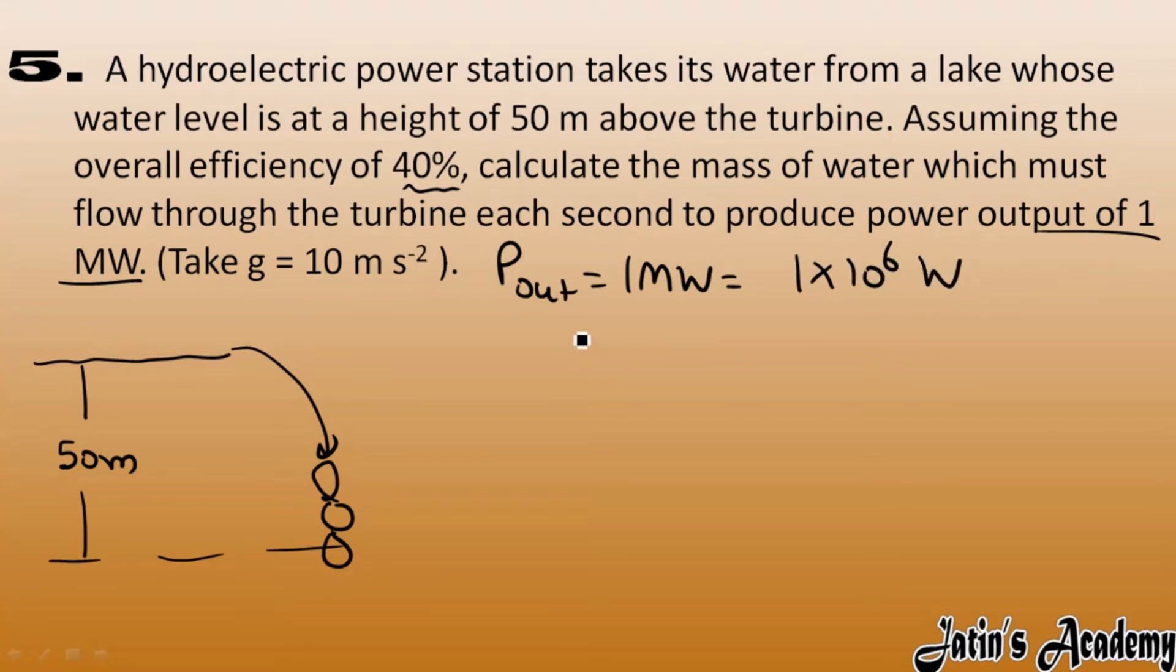Now we have used the formula of efficiency as power output by power input. Here power output is 10 raised to power 6. Power input we have to calculate and efficiency is given as 40 percent, 40 percent means 0.4. So here power input after getting cross multiply we got 10 raised to power 6 divided by 0.4 and this becomes 2.5 into 10 raised to power 6 watt.